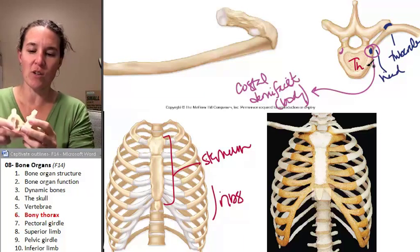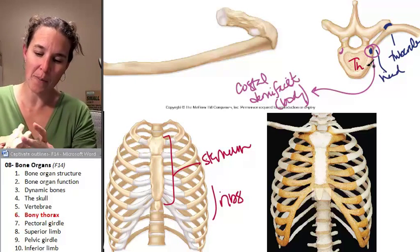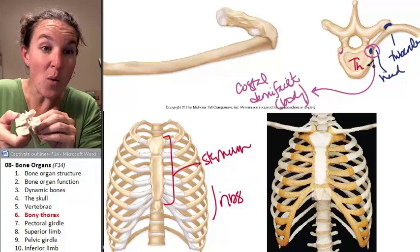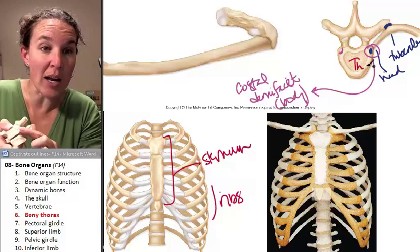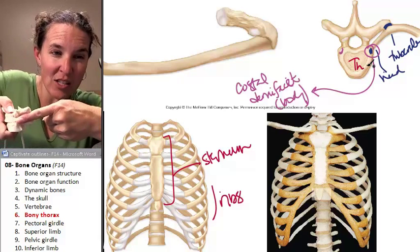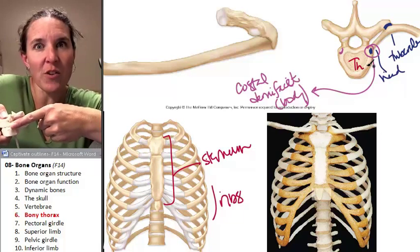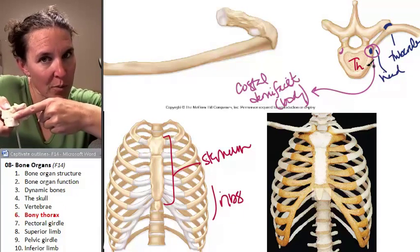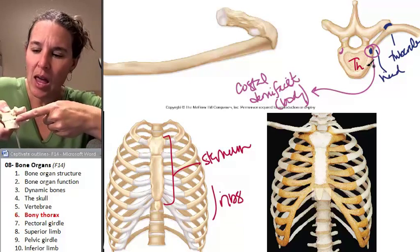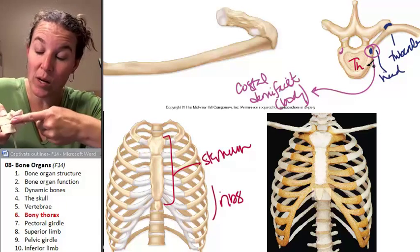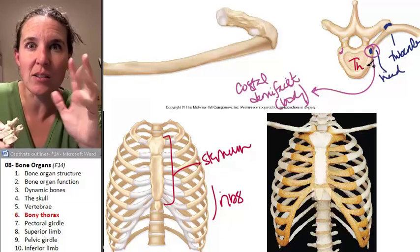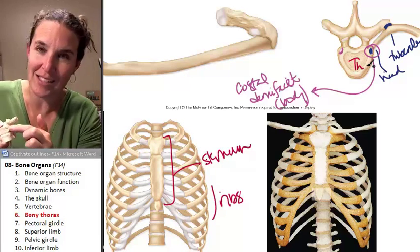To visualize this, stack them up. We have costal demifacets on the body, and if we attach a rib here, the head of the rib would actually attach between the two — a little bit on the inferior surface of the top vertebra and a little bit on the superior surface of the bottom vertebra. Because each rib articulation attaches half to each vertebra, it's called a demifacet — half a facet. The whole facet is the whole thing.